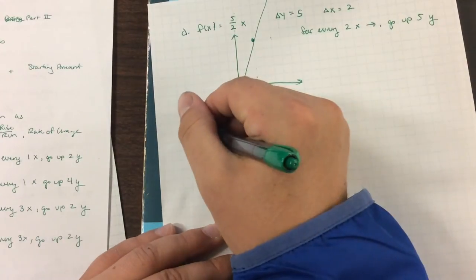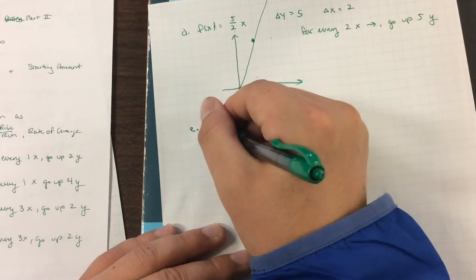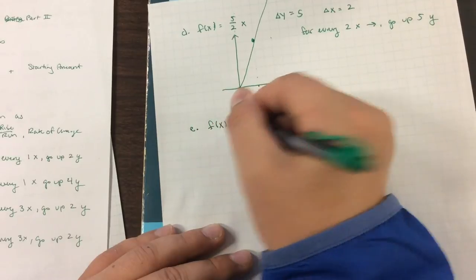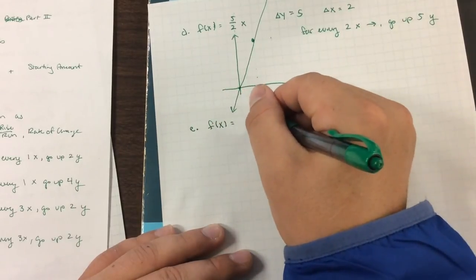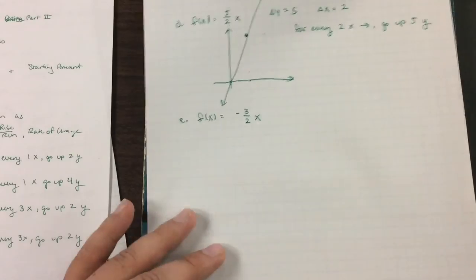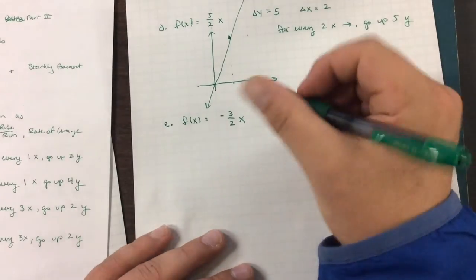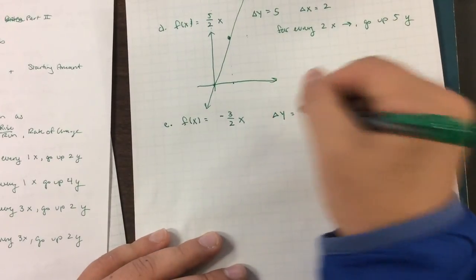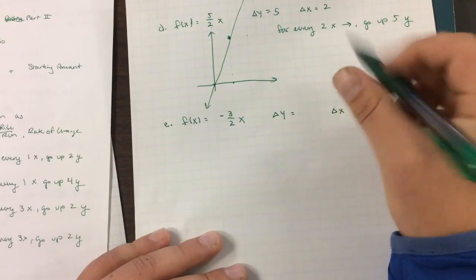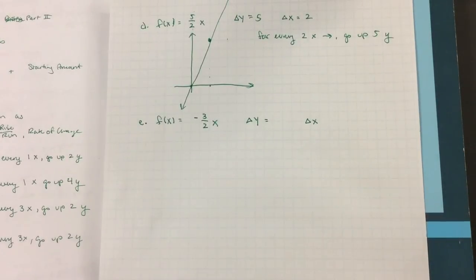The last thing I want to leave you with is this challenge question. F of x equals negative 3 halves x. I want you guys to try and do this. Give me my change of y and my change of x. And give me a little sentence on what you think that might be. And this will be the first question we have when we come to class. If you have any questions, make sure you write them down so that we can go over them.